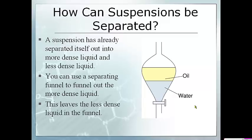The last way to separate heterogeneous mixtures is to use a separating funnel, which is used to separate a suspension. If you have two liquids and one is more dense than the other, they will automatically separate themselves. You can turn the little knob on the separating funnel and drain out the water at the bottom, and when the oil finally gets down to that level you shut off the knob again. Your oil stays inside the separating funnel and your water is now in another container. Make sure you bring your notes to class and have a good day.